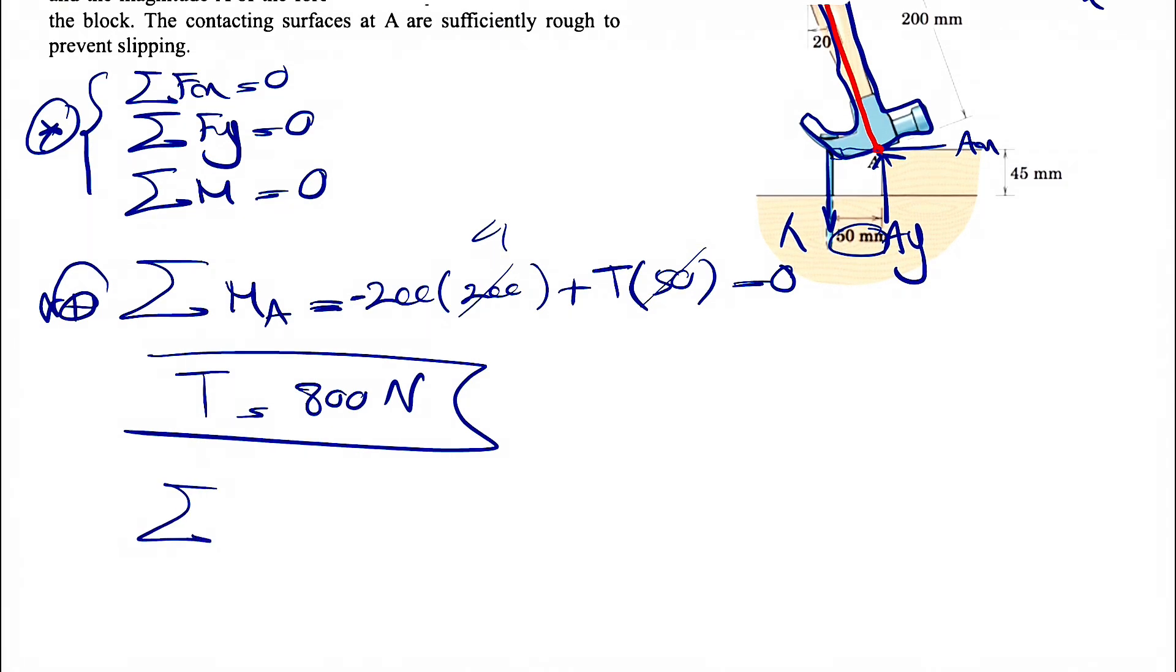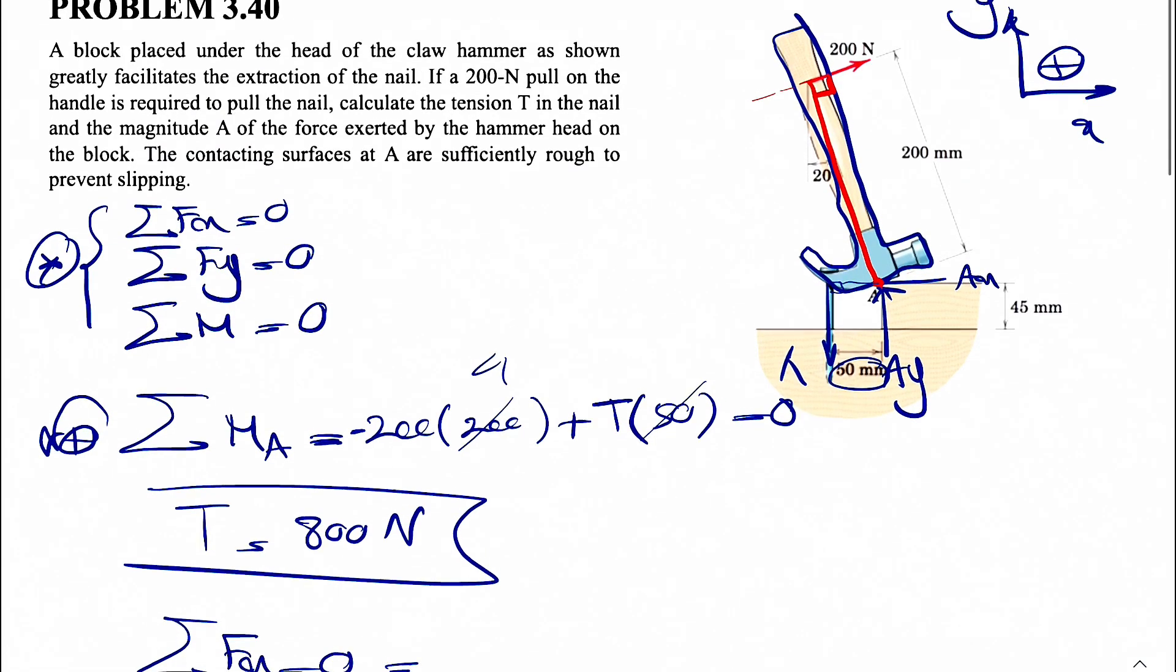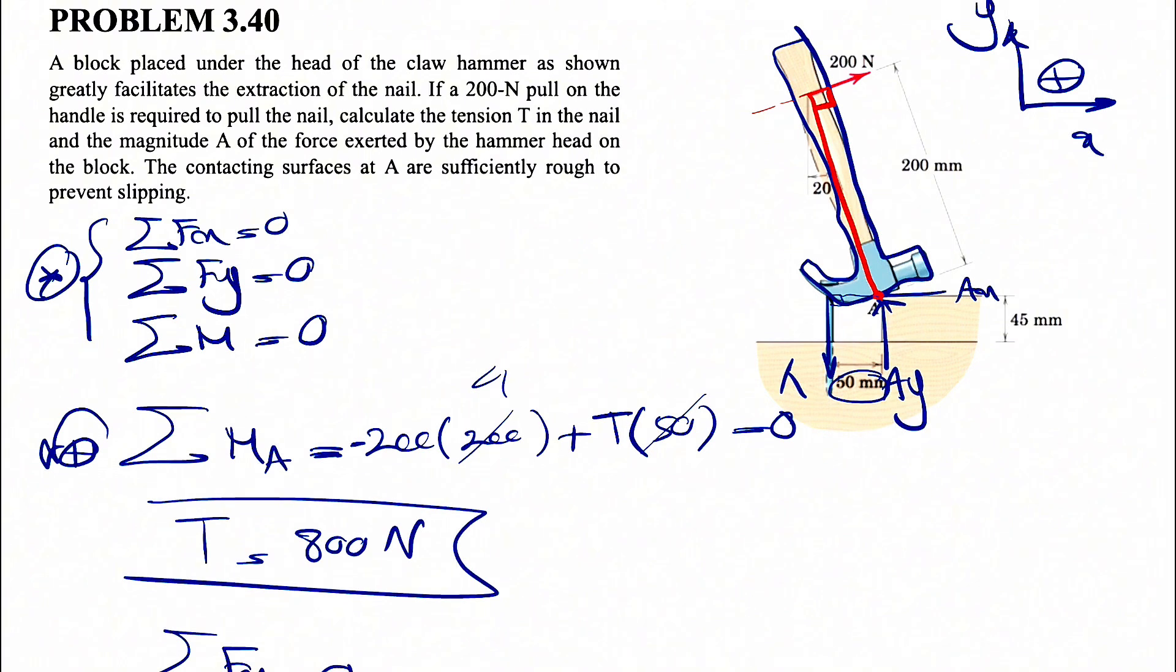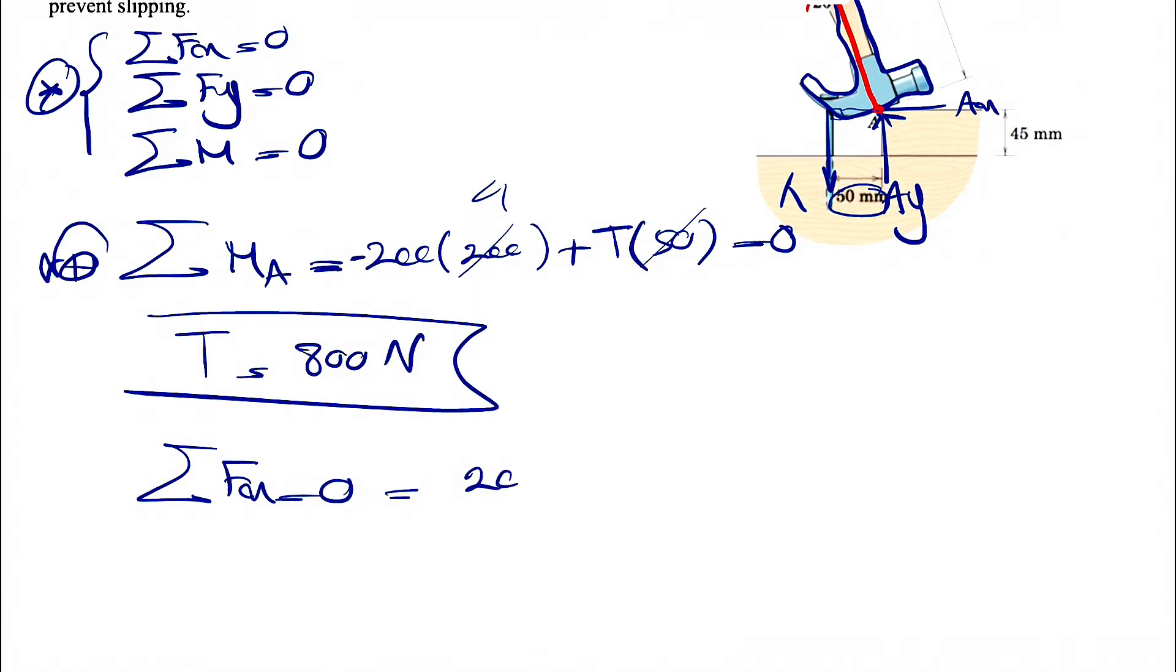And now we just have to do sum of all forces in X equals zero. In X direction, we're going to have the X component of the 200. And since we have this angle 20 degrees, this angle here is also 20 degrees based on the trick that we discussed when we have two angles where each side is perpendicular to the other one. So for finding the X component, we're going to have 200 cosine of 20 degrees.